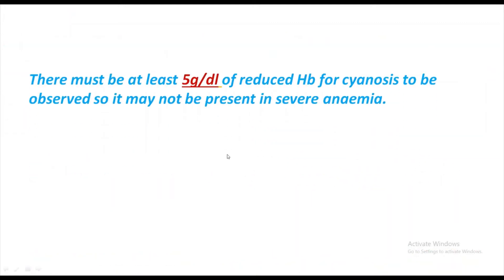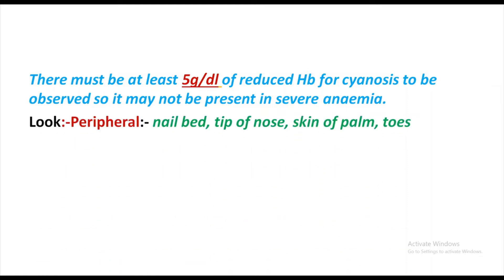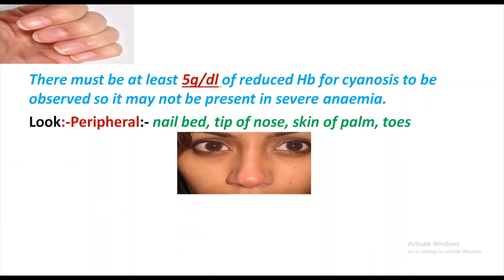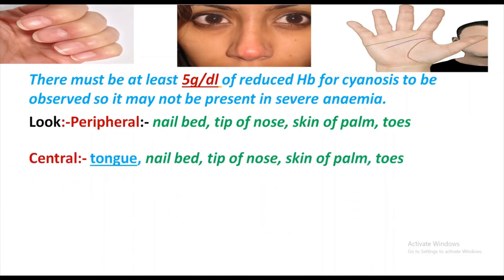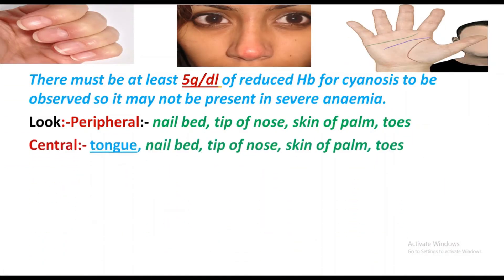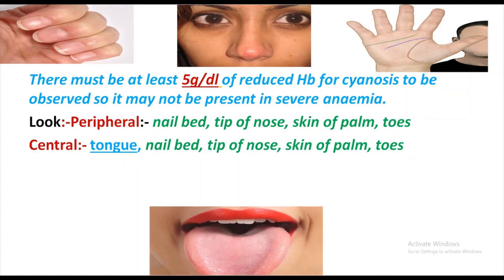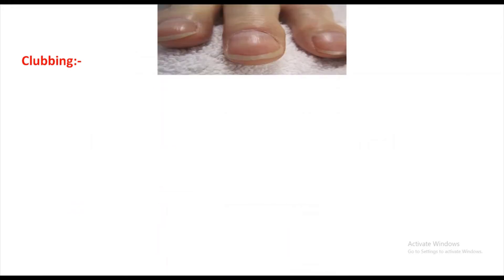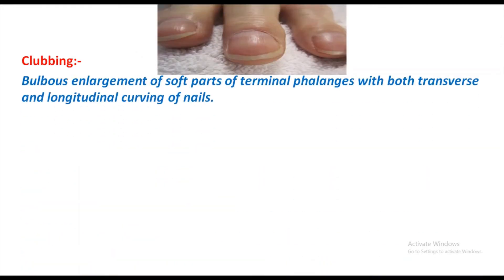Central cyanosis is a reduction in oxygen of the arterial blood, so it is a defect at the heart or lung level. There must be at least five grams of reduced hemoglobin for cyanosis to be observed, so it may not be present in severe anemia. For peripheral cyanosis, look at the nail bed, tip of the nose, skin of the palm, and toes. Central cyanosis should be looked for at the tongue, nail bed, tip of the nose, skin of the palm, and toes.